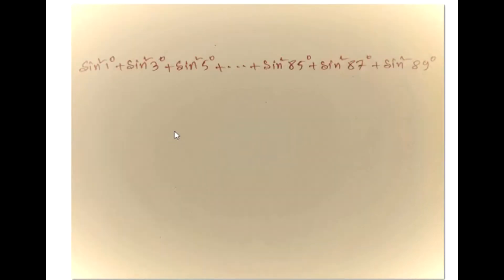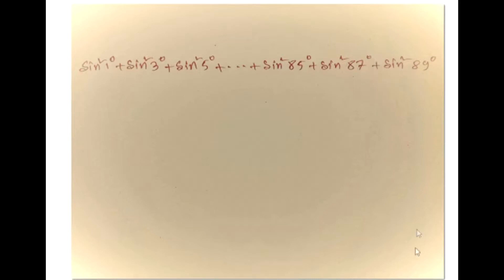So if they change the number, the angle, here is another example. Sin square 1 degree plus sin square 3 degree plus sin square 5 degree, sin square 85 degree, sin square 87 degree plus sin square 89 degree.